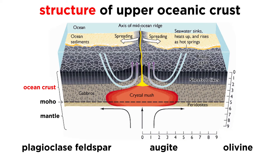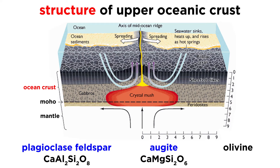The basalt and gabbro of the upper oceanic crust is composed mainly of calcium-rich plagioclase feldspar (CaAl2Si2O8), augite (CaMgSi2O6), and magnesium-rich olivine (Mg2SiO4).